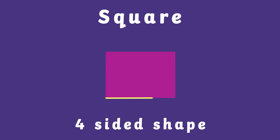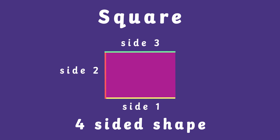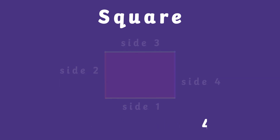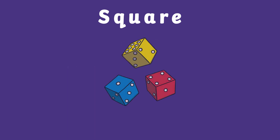A square has four sides. A square is also the shape of a dice.